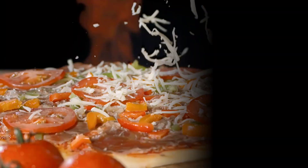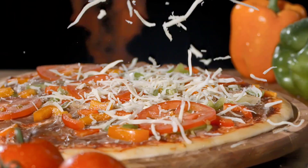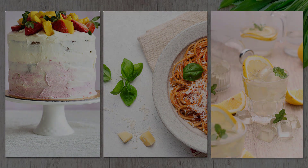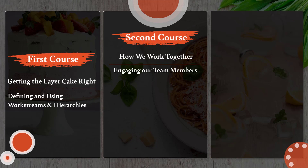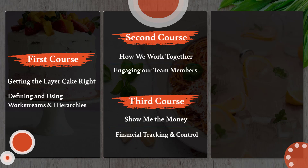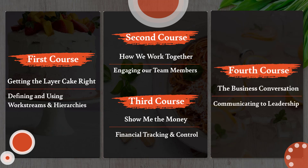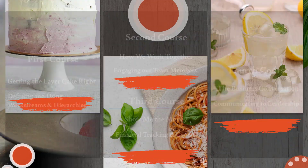That's what we're going to address now. We'll go through this in four courses. The first course is getting the layer cake right — defining and using work streams and hierarchies in the solution. The second course is how we work together — engaging team members. The third course is show me the money — financial tracking and control for the program. And finally, the fourth course is business conversation — how you would communicate to leadership using the available functionality in the solution.